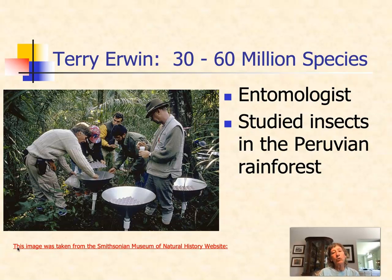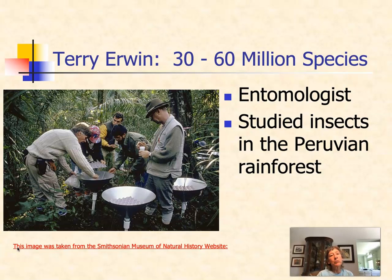Later, Terry Irwin, who is an entomologist — a person who studies insects — was studying insects in the Peruvian rainforest. Based on his studies, he estimated there are somewhere between 30 and 60 million species on the planet, which makes Norman Myers' estimate of 10 million a very low estimate. But again, nobody really knows how many species are on the planet; we've only discovered a small fraction of the animals that live here.